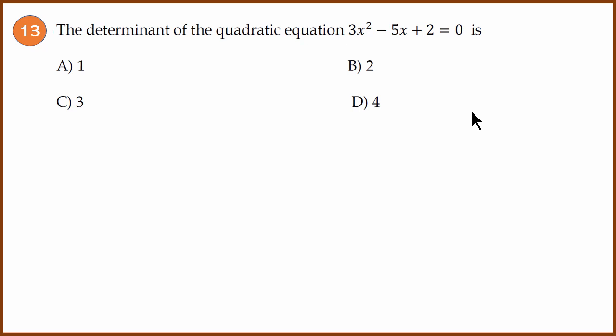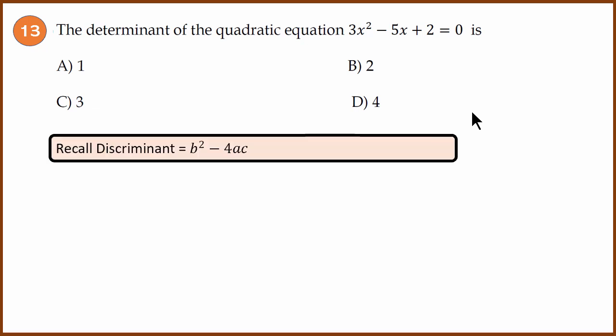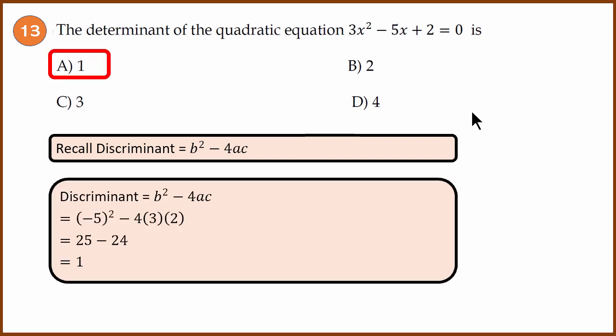Question 13: Determinant of a quadratic equation. The determinant formula is b² - 4ac. In this case, b² - 4ac is (-5)² - 4 × 3 × 2. -5 squared is 25, this is 24. The answer is 1, option A.